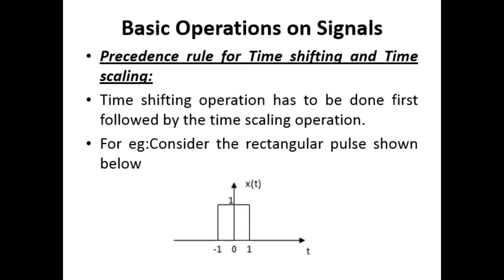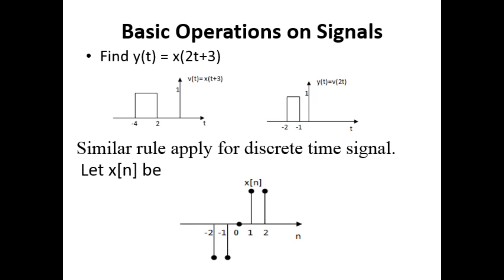For example, consider a rectangular signal as shown. We have to find y(t) = x(2t + 3). First, we perform the time shifting operation: v(t) = x(t + 3), which shifts the signal by 2 units to the left. Then we perform the time scaling operation, as given in the second figure.